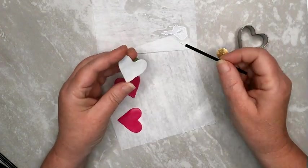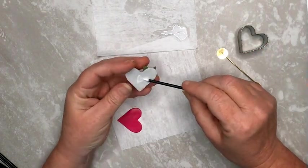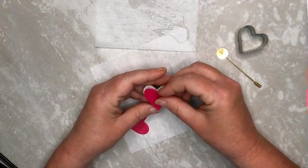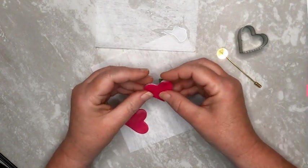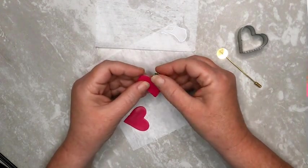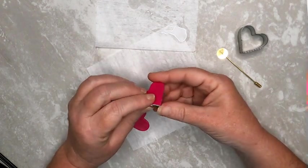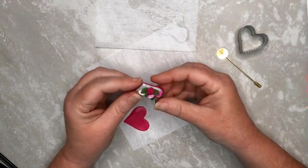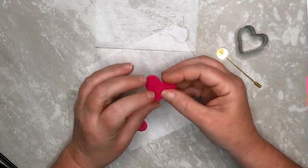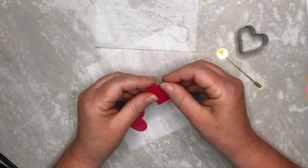Apply some liquid clay to the back of the cured heart. Then place one of the raw fuchsia hearts on the back of your cured heart. Press from the center outward to remove any air bubbles. Don't worry if it doesn't fit perfectly at this point. We'll trim it later.